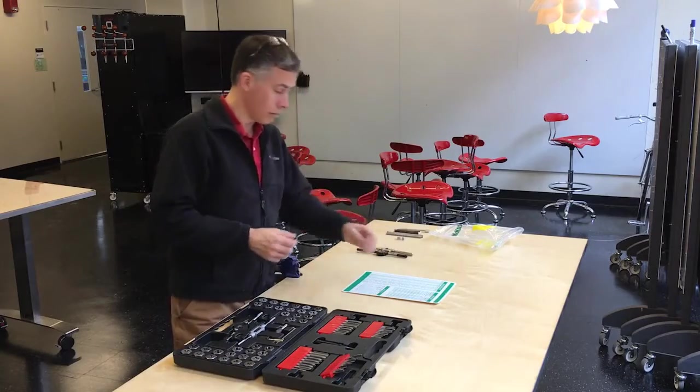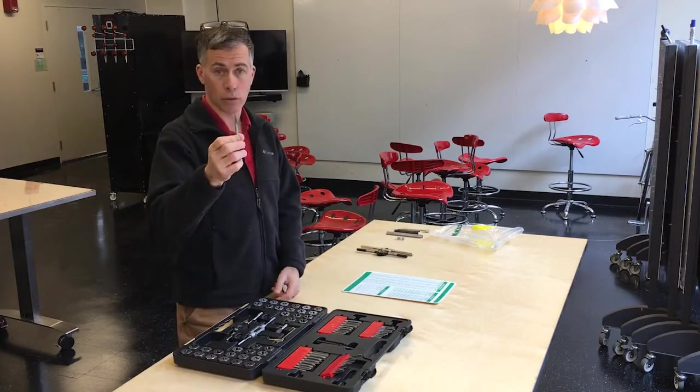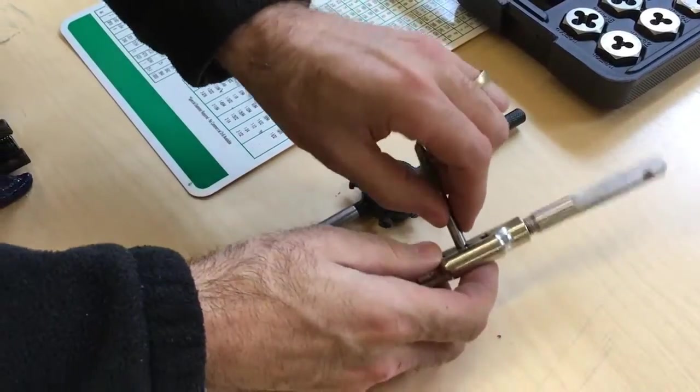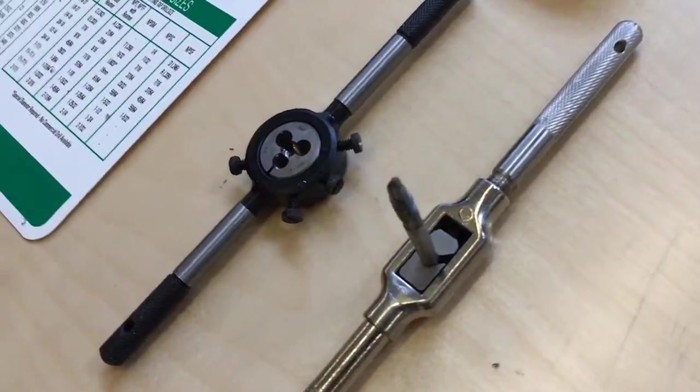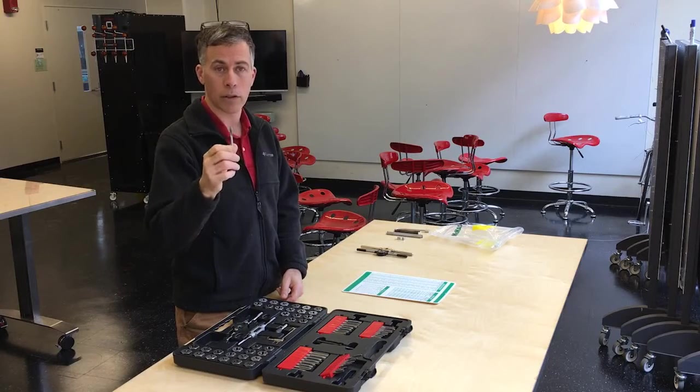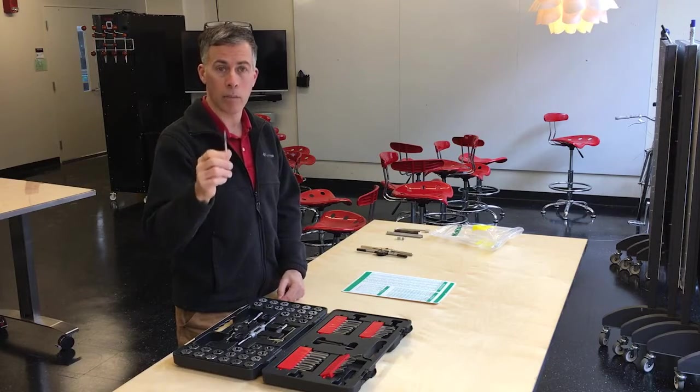Taps being these that actually look like screws. This is a cutter. It looks a little bit like a cross between a drill bit and a screw, and it is intended to cut threads on the inside of a hole to make female threads.